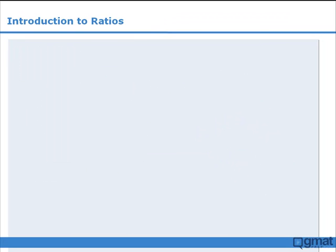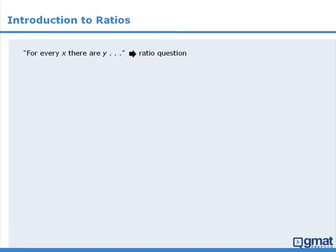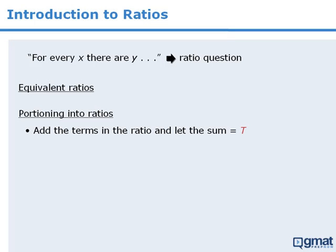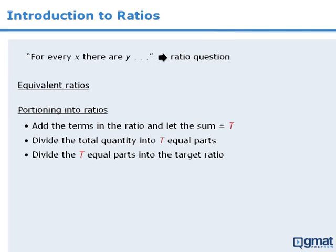Let's summarize. In this lesson we learned that if a question can be written in the format 'for every x there are y' then it is a ratio question. We learned how to solve equivalent ratio questions and portioning questions. To solve portioning questions, add the terms in the ratio to get a sum t, divide the total quantity into t equal parts, and then divide the t equal parts into the target ratio.